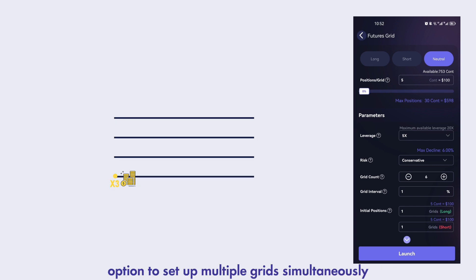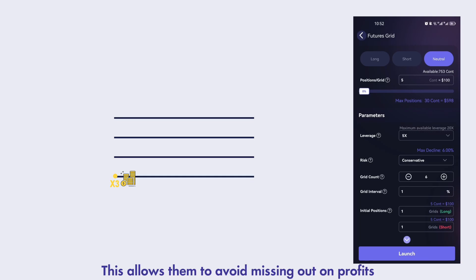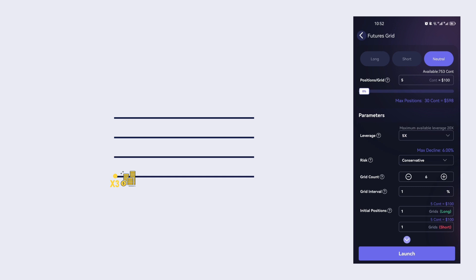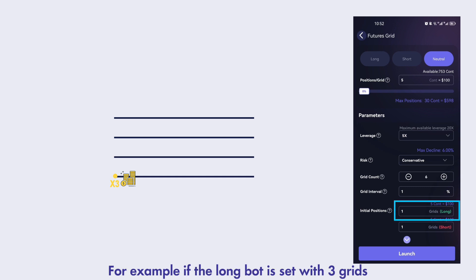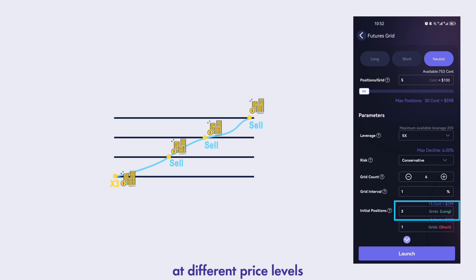Traders have the option to set up multiple grids simultaneously. This allows them to avoid missing out on profits when the price continues to move in a favorable direction. For example, if the long bot is set with 3 grids and the market continues to rise, these 3 grids will be profitably sold at different price levels.